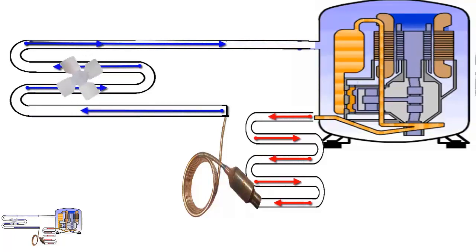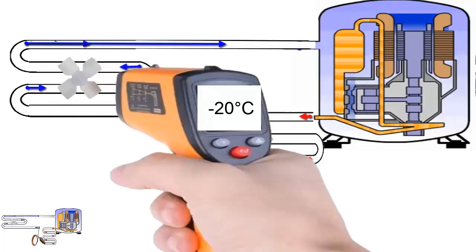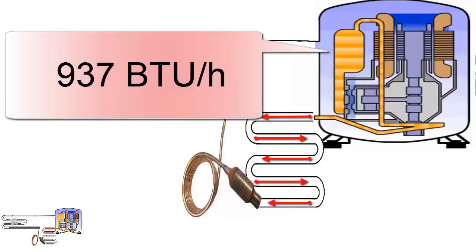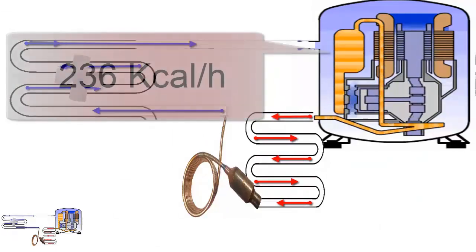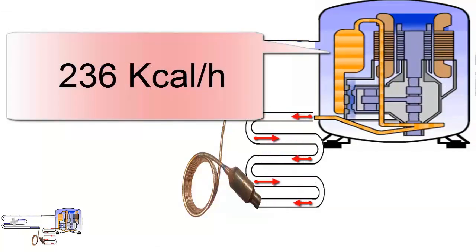At minus 20 degrees Celsius, equivalent to minus 4 degrees Fahrenheit, the system offers a cooling capacity of 937 BTU per hour, equivalent to 236 kcal per hour.